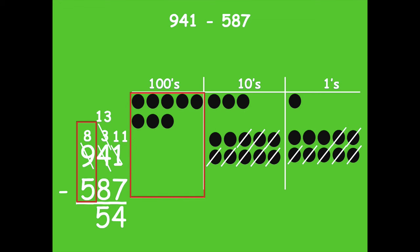Now I move to my hundreds place. Eight hundreds minus five hundreds. One, two, three, four, five. Leave me with three hundreds. So 941 minus 587 equals 354.